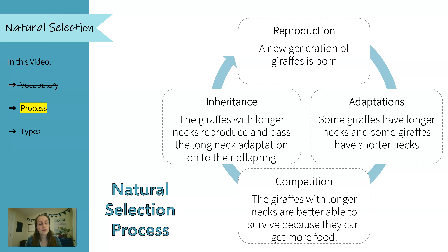And the giraffes with the shorter necks perhaps don't get enough food to survive, and so they die before they reproduce. Or perhaps because they have less food, they are not as healthy — they might get sick or they might not be able to run as fast, and again they're less likely to reproduce. So the next new generation of offspring will probably have more longer-necked giraffes than shorter-necked giraffes.